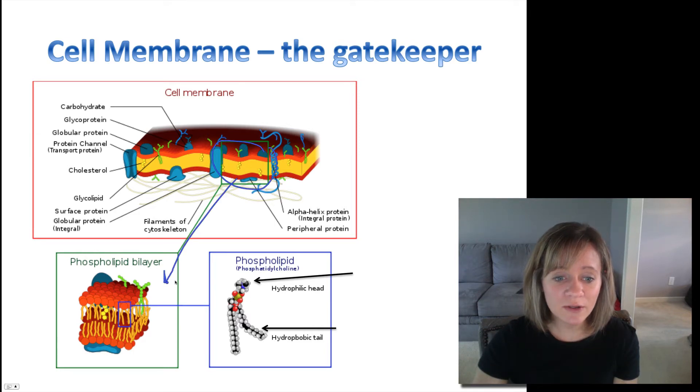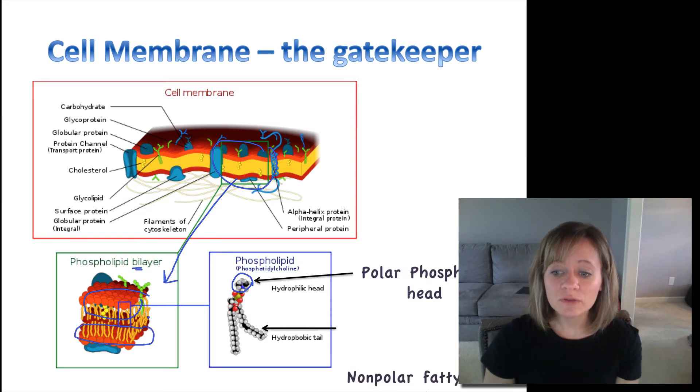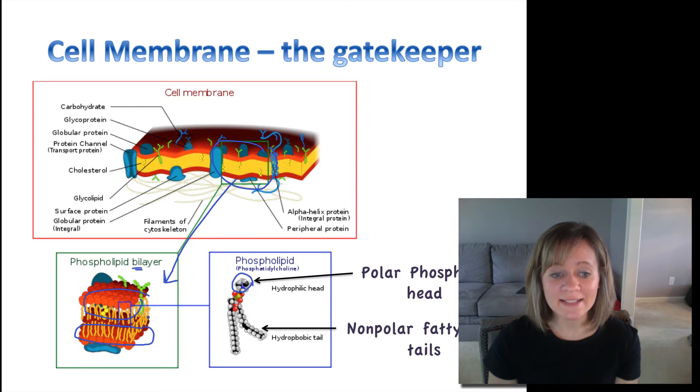We're going to zoom in on it here. And remember from the macromolecule video, this is a fat. It has a hydrophilic phosphate head and it has two hydrophobic fatty acid tails. And it's a bilayer so it's got two layers, one layer on top and one layer on bottom. So polar phosphate head, nonpolar fatty acid tail.